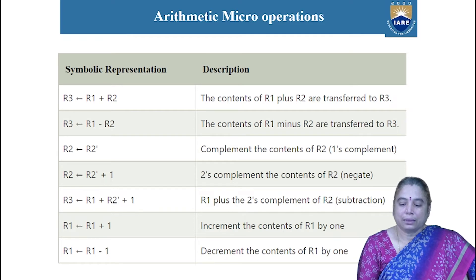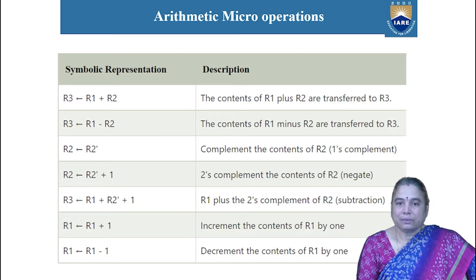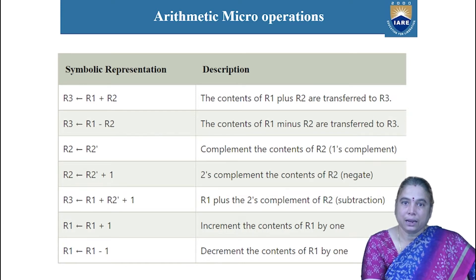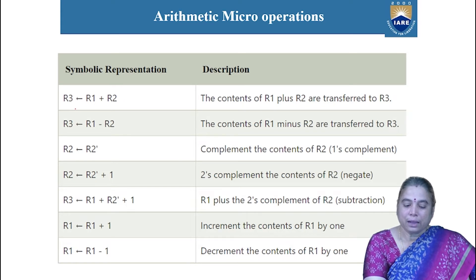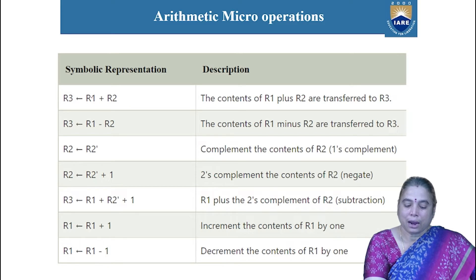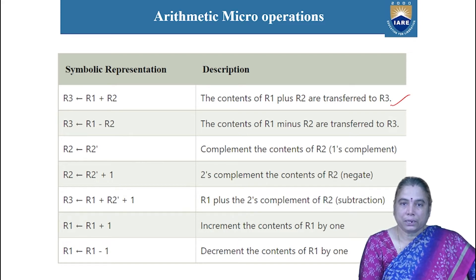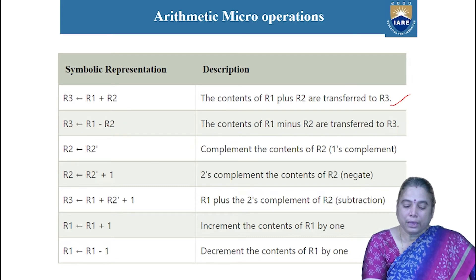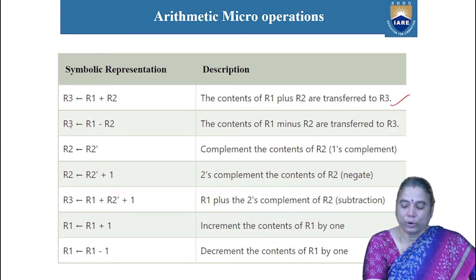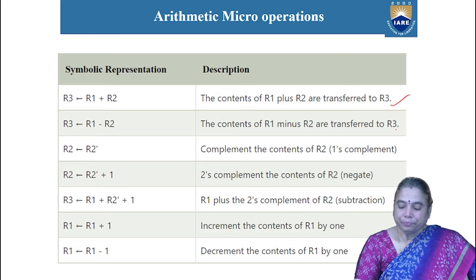Now, what are the various arithmetic micro-operations that support the discussed binary operations? The first is addition, represented in RTL as R3 ← R1 + R2, meaning R3 contains the sum of register R1 plus register R2 — the addition of R1 and R2 is performed and the sum is stored in R3. The second operation is subtraction, represented in RTL as R3 ← R1 − R2, meaning the content of R1 is subtracted from R2 and the result is transferred to R3.